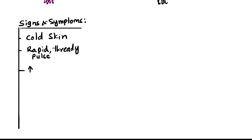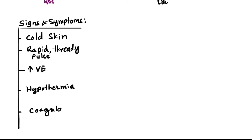A weak pulse occurs because of low ejection fraction. Next is an increased ventilatory response — hyperventilation (VE) — due to acidosis caused by anaerobic metabolism in the absence of oxygen. Hypothermia and coagulopathy are also seen; coagulopathy means loss of coagulatory response due to loss of coagulation factors from blood loss.